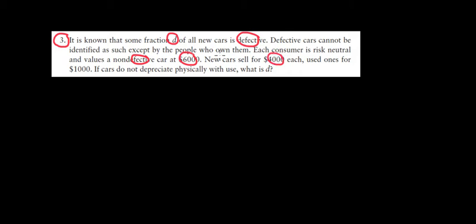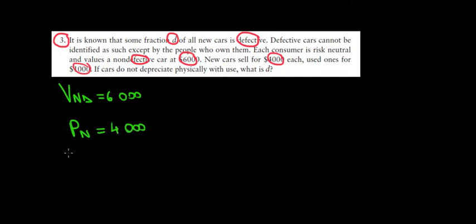Let's have a look at question 3. We know that we have a fraction D of all new cars that are defective. Defective cars cannot be identified, each consumer is risk-neutral, and values a non-defective car at six thousand dollars. New cars sell for four thousand dollars each and used cars sell for a thousand dollars. Let's write the data down: the value of a non-defective car is six thousand dollars, the price of a new car is four thousand dollars, and the price of a used car is one thousand dollars.